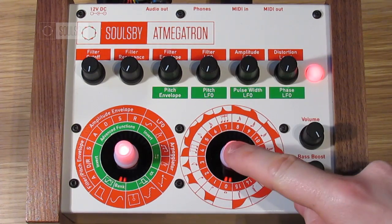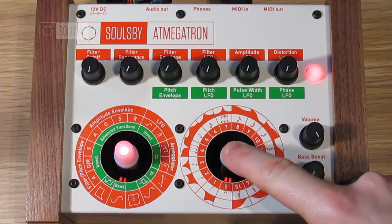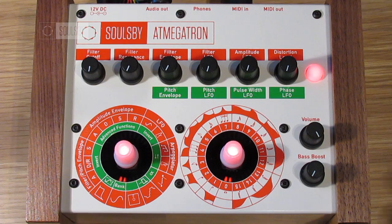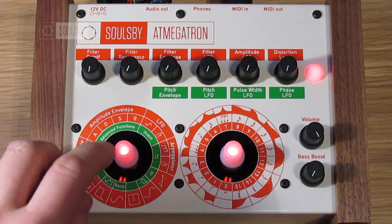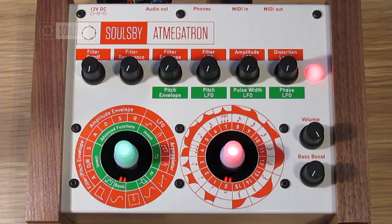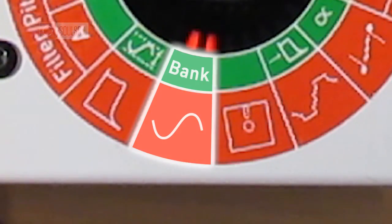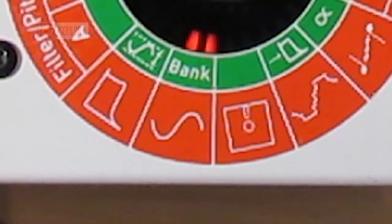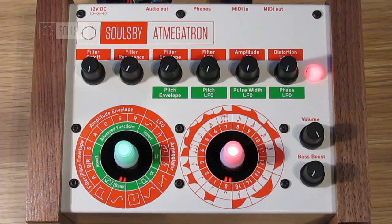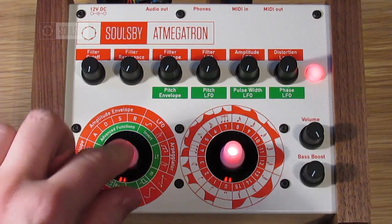If I push this knob here it acts as a test mode so I don't need a MIDI controller keyboard connected. If I push this knob here it goes into green mode, and you can see by looking there I'm on waveform — it will change the bank. If I press the test mode you can hear the waveform has changed.